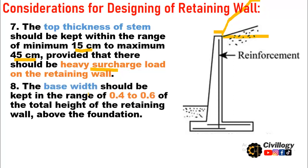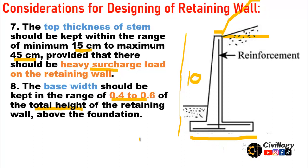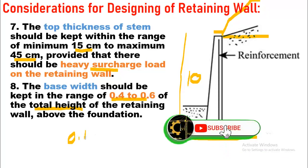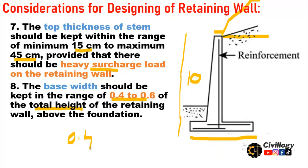Consideration eight: The base width should be kept in the range of 0.4 to 0.6 times the total height of the wall. For example, if the total height of the wall is 10 meters, the base width should be 0.4 to 0.6 times 10 meters, which equals 4 to 6 meters. This is the thumb rule for the base width of a retaining wall.